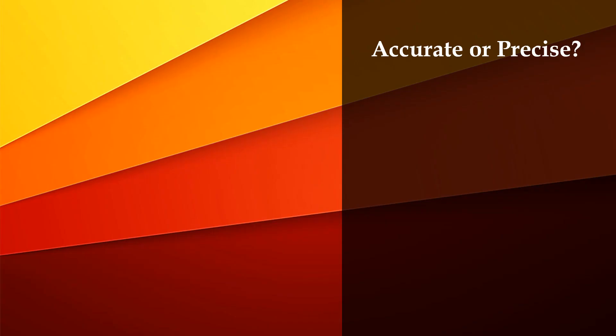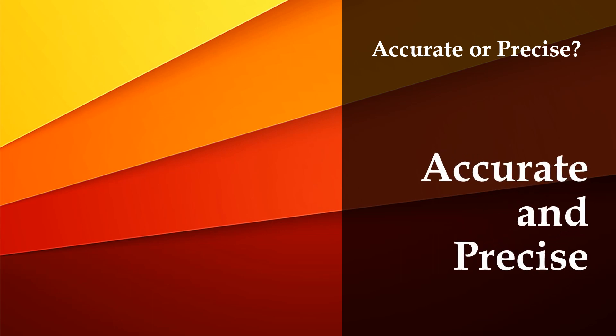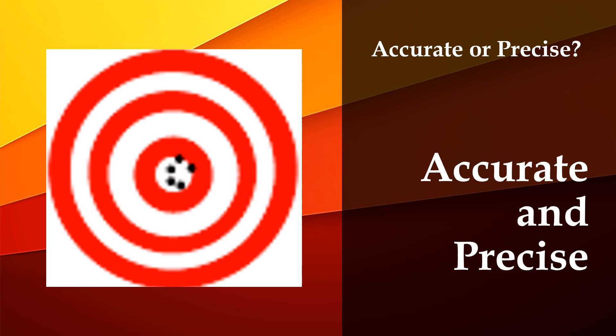In the laboratory, which of these two parameters should a test have — should it be accurate or should it be precise? Is it important that the test gives the true value, or is it important that repeated tests give the same result? The answer is that they are both important. A test result should be both accurate and precise. In the target chart, when you test it, it reflects the true value, and when you repeat the test, it also reflects the true value over and over again. It cannot be only accurate, and it cannot be only precise — it must be both.